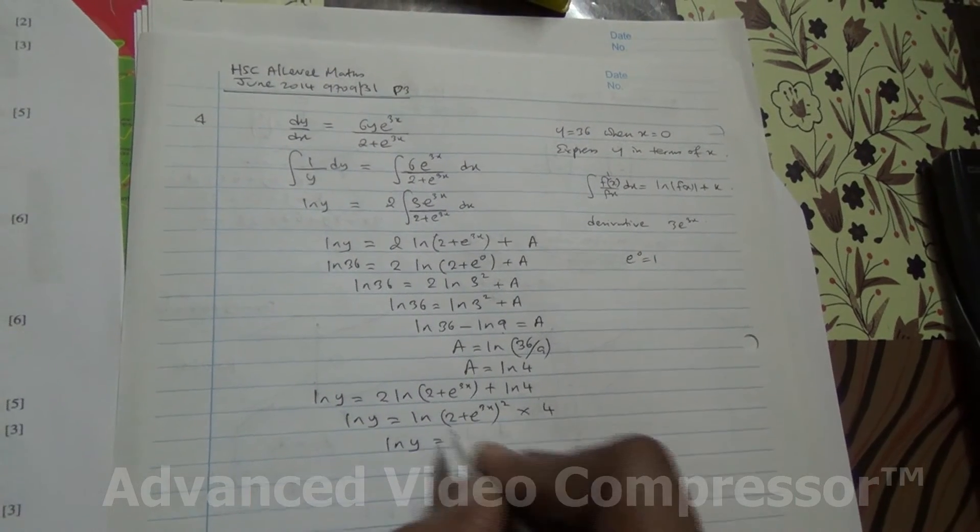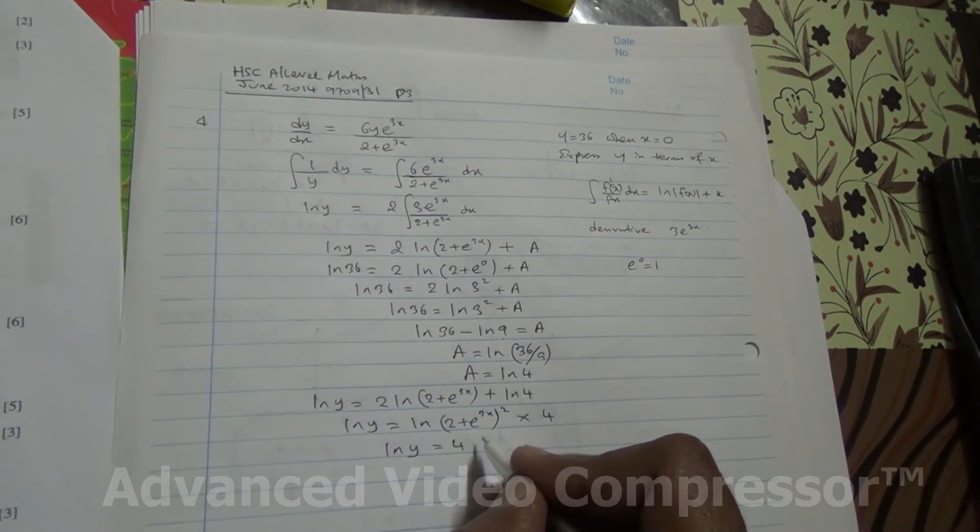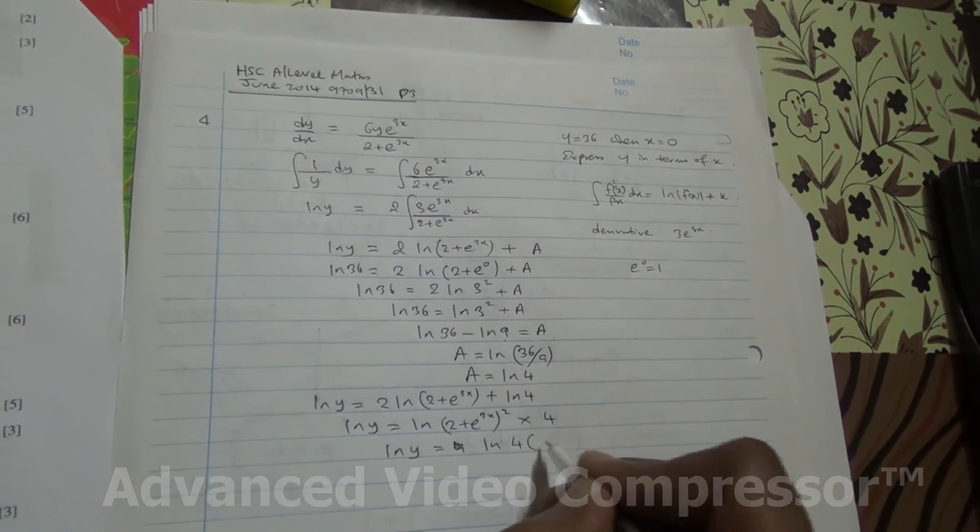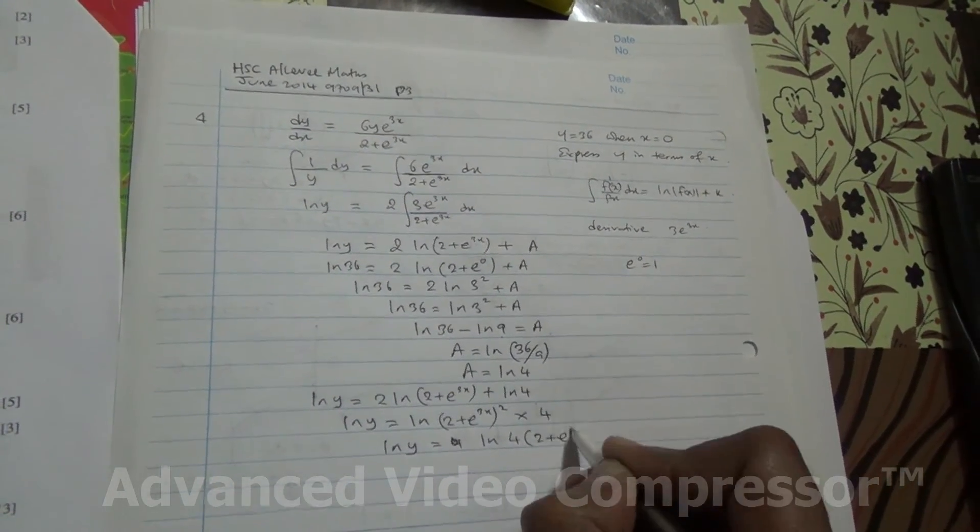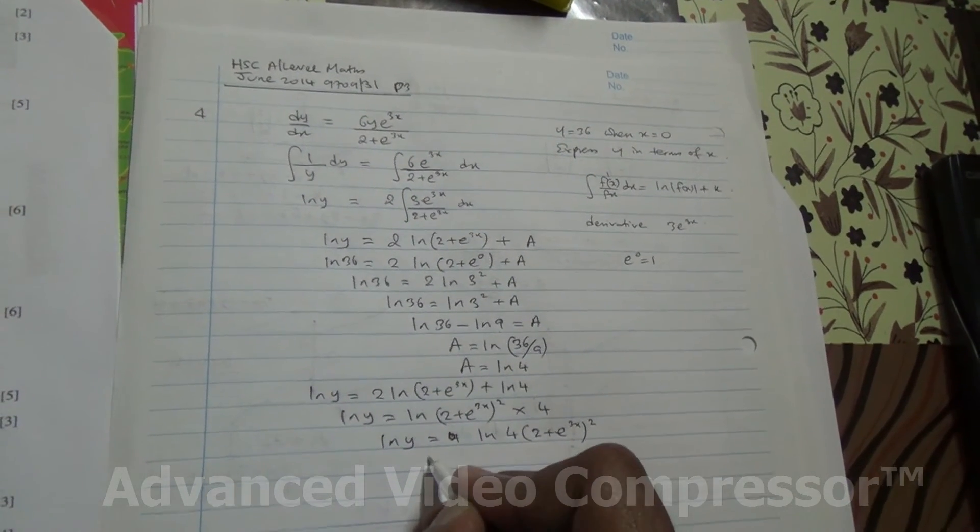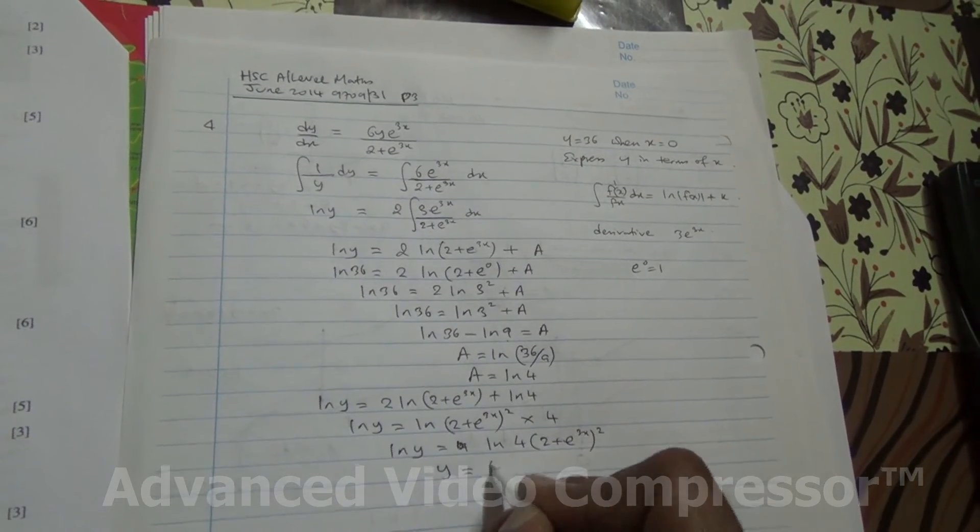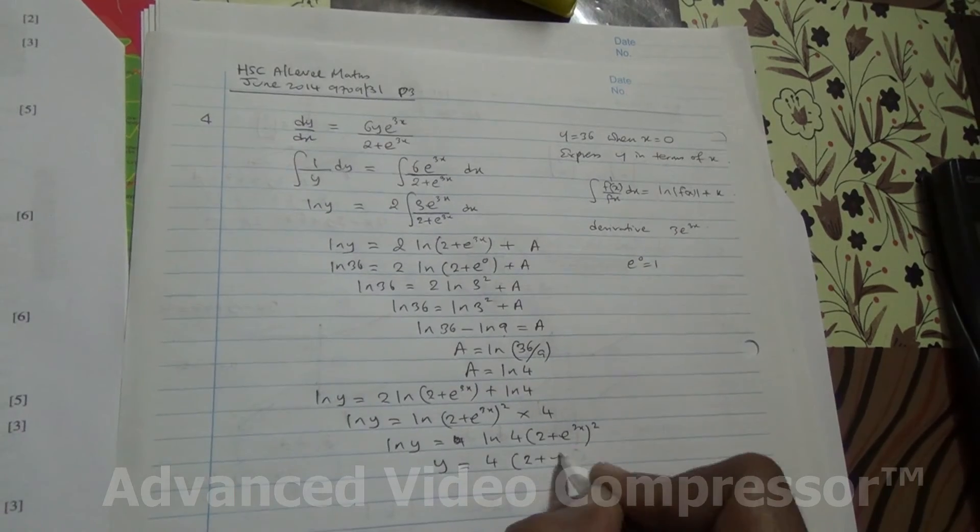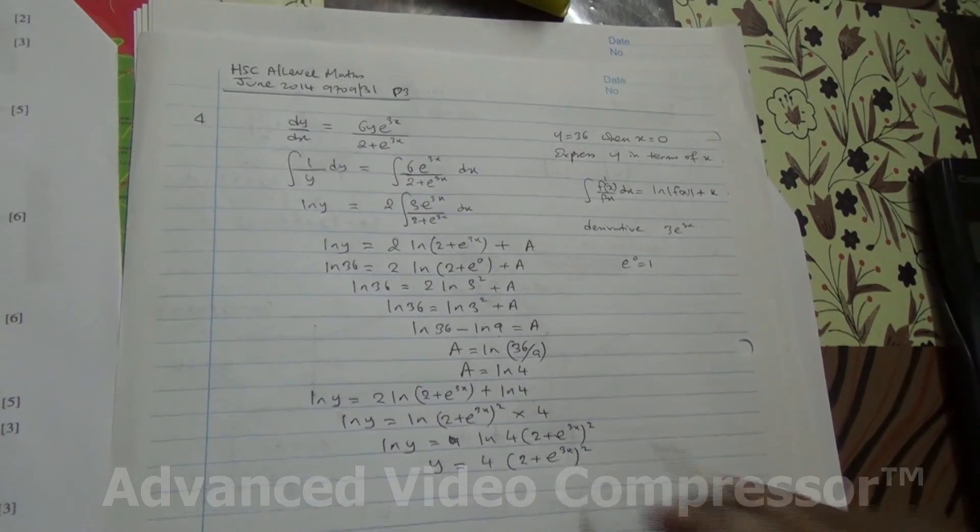ln y is equal to 4 times 2 plus e to the 3x, all to the square. So, we're saying then that y is equal to 4 into 2 plus e to the 3x to the square.